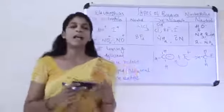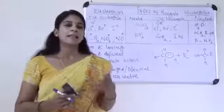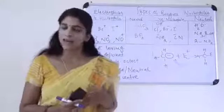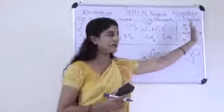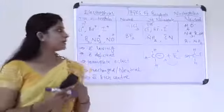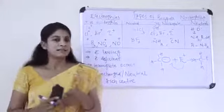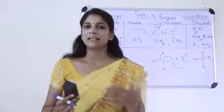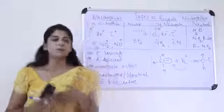Next, what about nucleophiles? Nucleophiles are negatively charged species — or neutral species — that can donate an electron pair in a reaction. They are electron pair donor species.